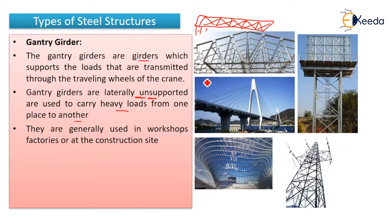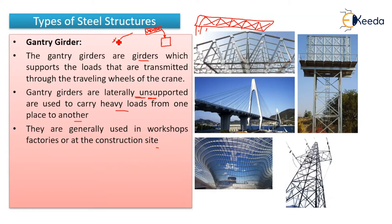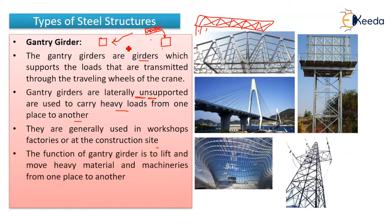Gantry girders are generally used in workshop factories or at construction sites. For example, in a workshop, if you have heavy machinery weighing 100, 150, or 200 tons and you want to transport it from one place to another, you use a crane-like steel structure. The function of gantry girders is to lift and move heavy material and machinery from one place to another.